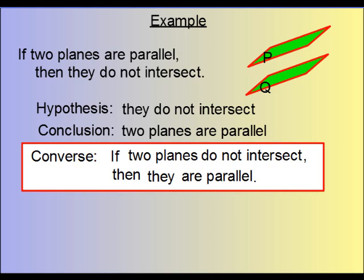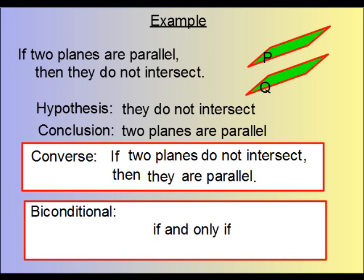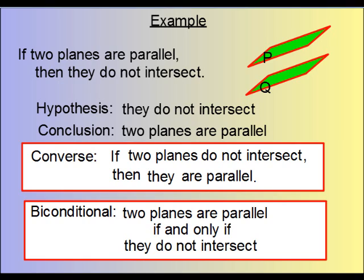So, now it's okay to go ahead and write the bi-conditional statement. Recall that the bi-conditional statement has the phrase, if and only if, between the hypothetical and the conclusion. So, therefore, we can write two planes are parallel, if and only if they do not intersect.